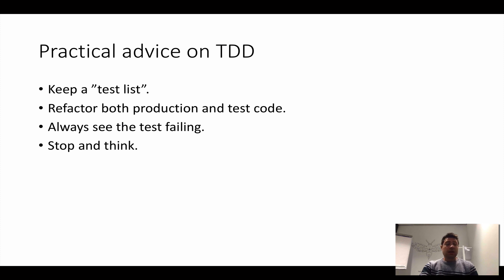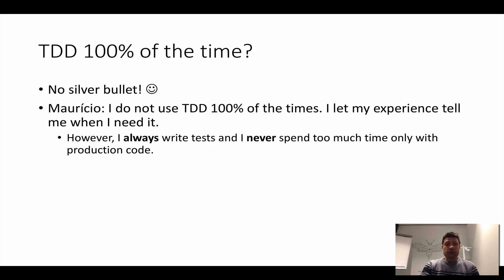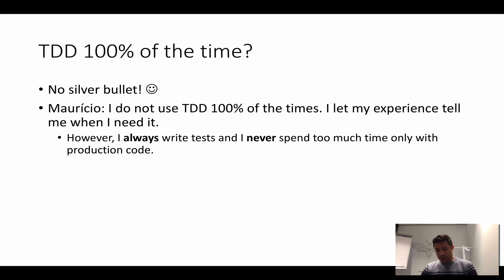Some advice: keep a test list of things you want to test. Refactor both the production and the test code. Always see your test failing at least once. Stop and think frequently — don't just go and program like crazy. TDD doesn't have to be 100% of the time; there are no silver bullets. Even I don't do TDD 100% of the time — I do TDD when I feel I need it, for example when I don't know how to design my functions. But what I always do is write tests and never spend too much time only on production code — I write a little production and a little testing, always in a timely manner as the FIRST principles suggest.